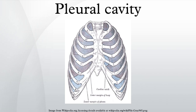The visceral pleura receives its blood supply from the bronchial circulation, which is the same as the lungs. The parietal pleura receives its blood supply from the intercostal arteries, which is the same as the overlying body wall. The costal and cervical portions and the periphery of the diaphragmatic portion of the parietal pleura are innervated by the intercostal nerves.